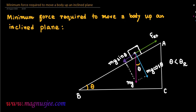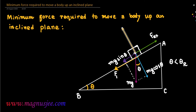Fex is the external force applied to move the body up the inclined plane. As a result, the limiting friction FL acts down the inclined plane on the surface in contact between the body and the inclined plane. The normal reaction R is perpendicular to the inclined plane, and at equilibrium R equals mg cos theta, where m is the mass of the body.